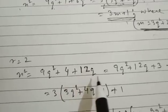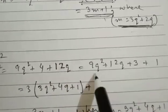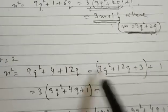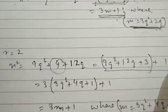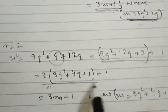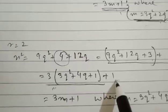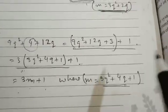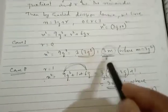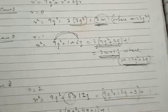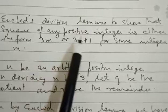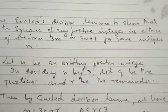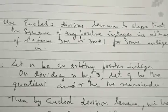For the last case, when r equals 2, we have n squared equal to 9q squared plus 4 plus 12q. The important step is writing 4 as 3 plus 1. The logic is we can take 3 common in the first three terms and the remaining is plus 1. So we express it as 3m plus 1, where m equals 3q squared plus 4q plus 1. Looking at all cases, the format is either 3m or 3m plus 1, which is exactly what the question required.